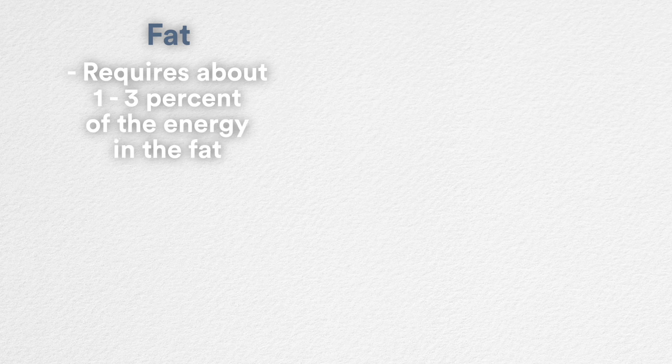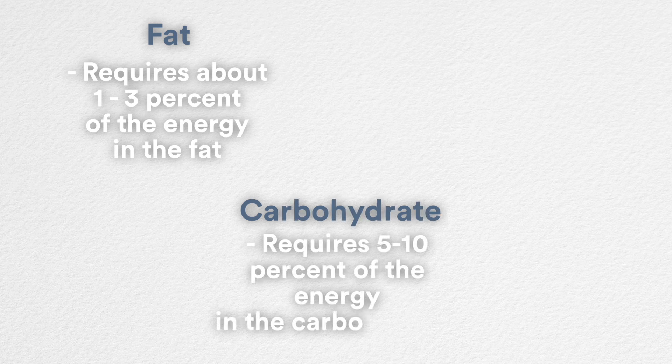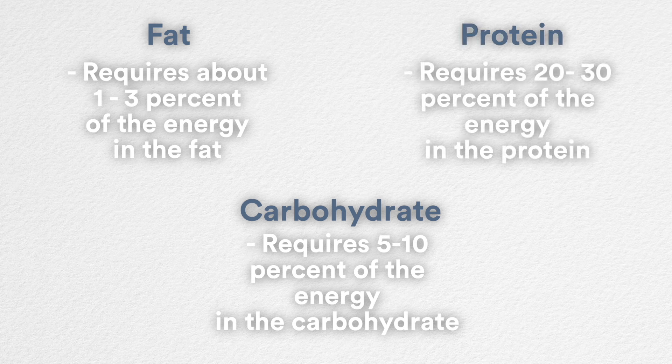The second thing we can do to help increase our metabolism comes down to diet. Every time we eat a meal, our body uses energy to break it down. The energy burned when processing your food depends on its content. Processing fat requires about one to three percent of the energy contained in the fat. Carbohydrates require five to ten percent of the energy they contain to process. Protein is the highest — it requires twenty to thirty percent of the energy it contains to be processed. This is why high-protein diets can be effective in weight loss, effectively increasing your metabolism.